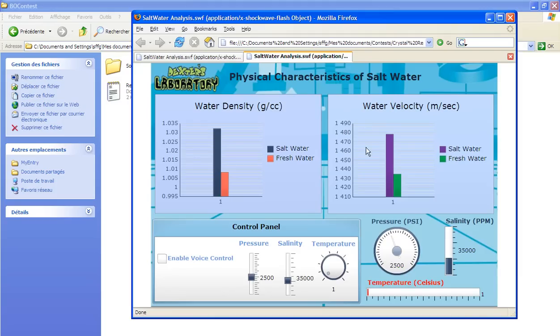As you see, the dashboard displays the physical characteristics of salt water: density and velocity. You can control this data if we change the temperature, salinity, and pressure.